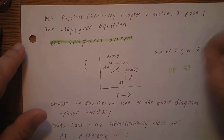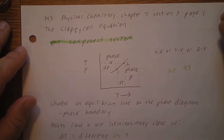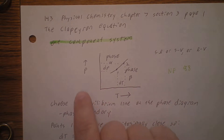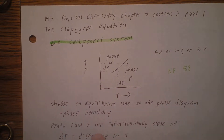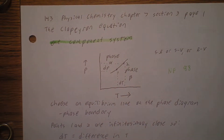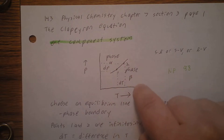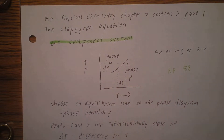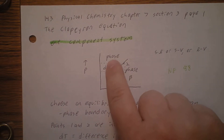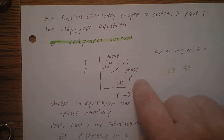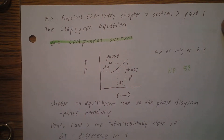First, let's say we have a one-component system. We have a phase diagram here with pressure on the vertical axis and temperature on the horizontal axis, and we have two phases, alpha and beta. These could be any two real phases — solid and liquid, solid and vapor, or liquid and vapor.